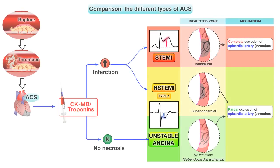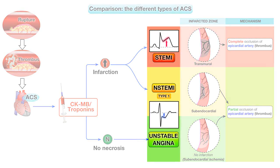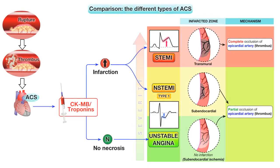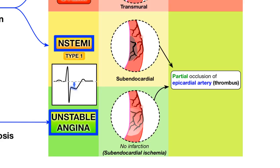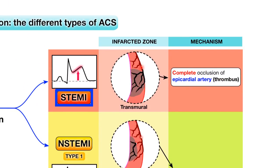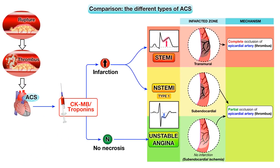ACS is a clinical spectrum extending from unstable angina and NSTEMI all the way to STEMI. On one hand, unstable angina and NSTEMI are due to subendocardial myocardial ischemia caused by an incomplete blockage of an artery by the thrombus. STEMIs, on the other hand, are caused by complete occlusion of an artery by a thrombus and subsequent transmural infarction.